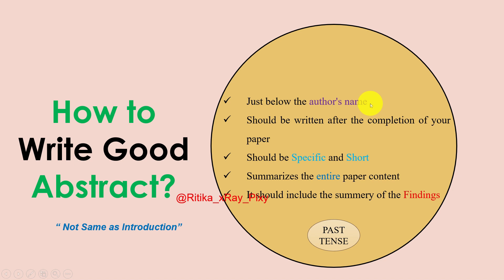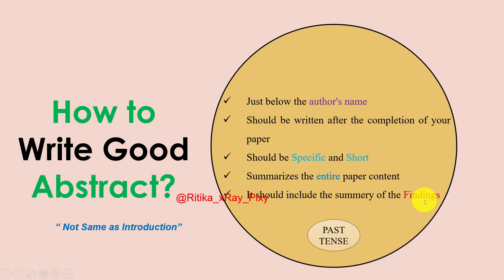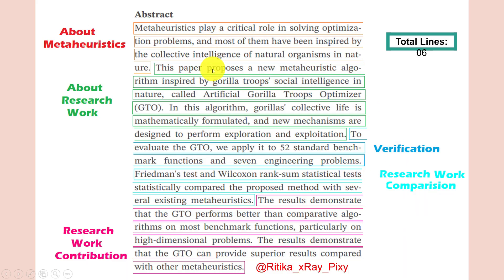To write a good abstract: the abstract is not the same as the introduction. It is just below the author's name and should be written after completion of the paper. It should be specific, short, and summarize the entire paper content, including a summary of your findings. For example, in just six lines: mention the technique used, the research work, verification and comparison, and the research contribution.